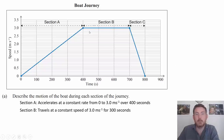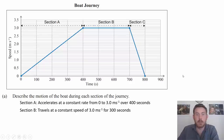In section B we've got a horizontal line meaning the speed stays at three meters per second. The time is 700 minus 400, which is 300 seconds. So the boat travels at a constant speed of three meters per second for 300 seconds.